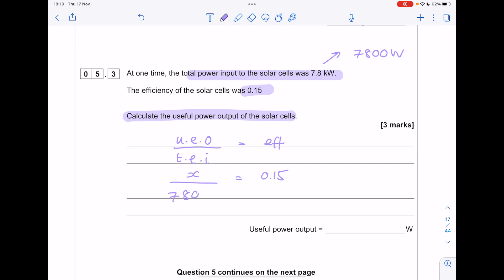We are after the useful energy out, we know that our total power input was 7,800 watts. To find X, remember you need to multiply 0.15 by 7,800 to get 1,170. Remember that number, because it's the output, should be less than the input, so that makes sense.